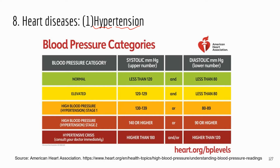From the American Heart Association chart, there is a normal range for systolic and diastolic pressure. For systolic pressure, the higher number, normally it should be below 120. If it's between 120 and 130, it's elevated. But if the systolic pressure is higher than 130, that usually indicates hypertension. Same thing for diastolic pressure — it should be less than 80, and if it's above 80, that indicates you may have hypertension.